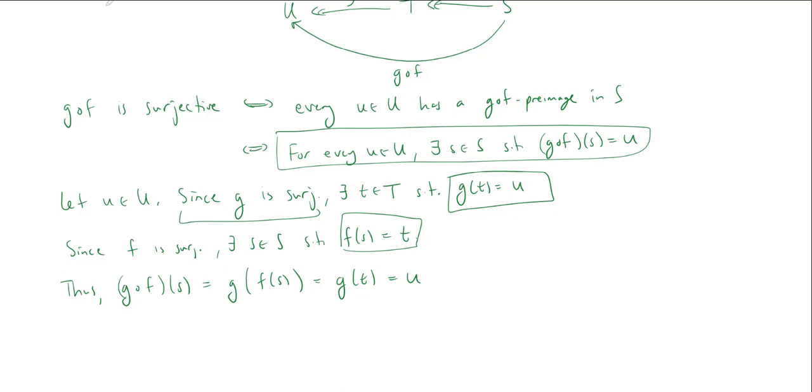For every element in u, there was a g composed f preimage, some s in s such that g composed f applied to s is equal to u. And that's what we get here. OK, and that finishes the proof.